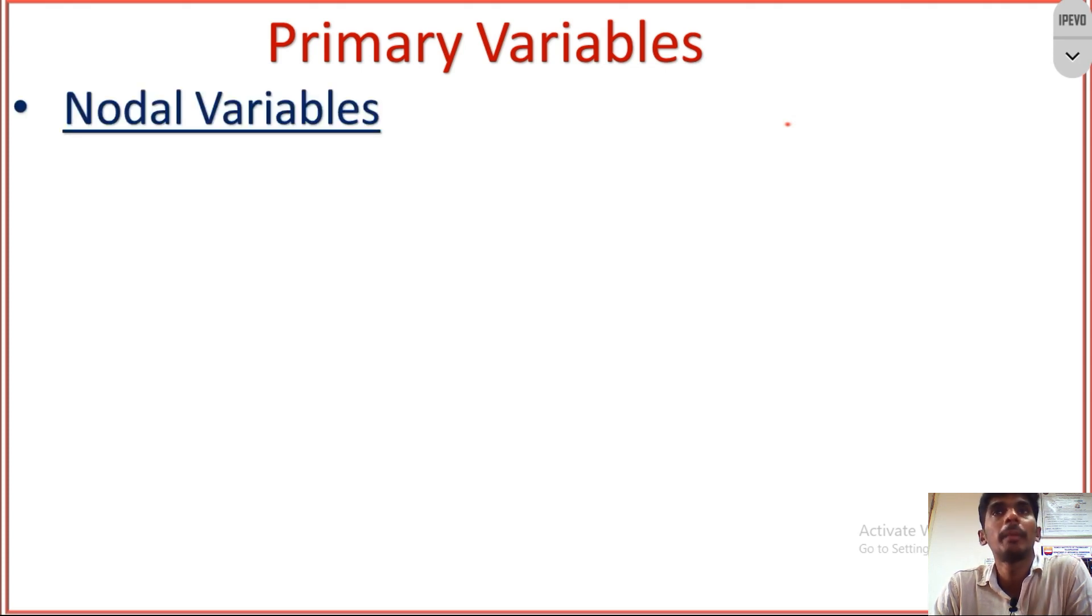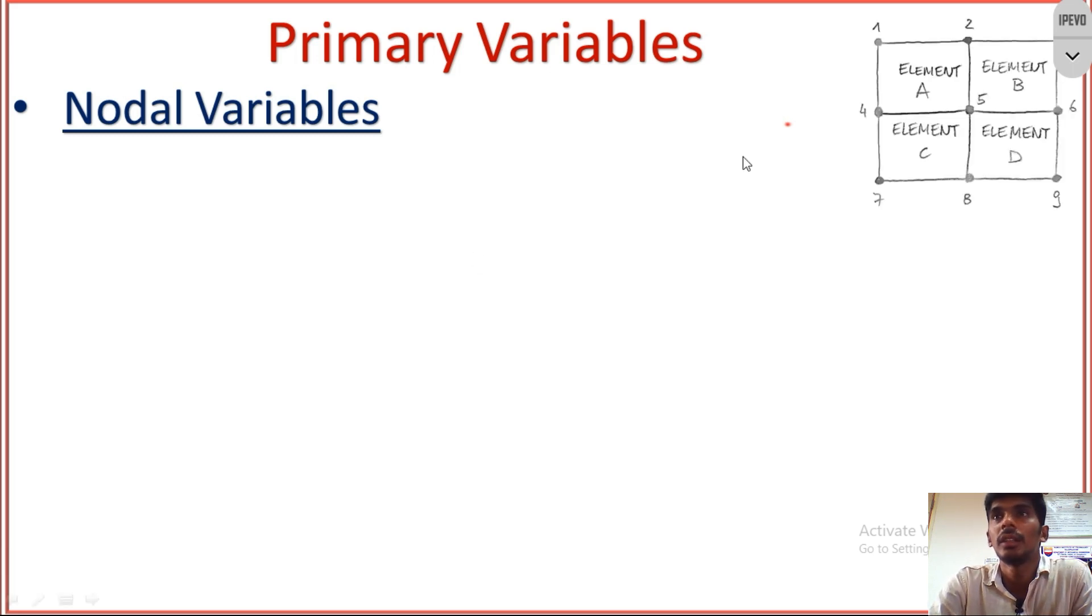Primary variables always indicate the nodal variables. So what are nodal variables? I will explain what is nodal value and everything.